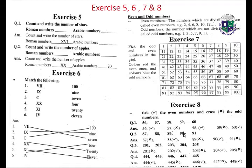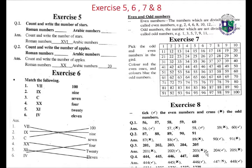56 tick, 57 cross, 58 tick, 59 cross, 60 tick. Question number two: 87 cross, 88 tick, 89 odd, 90 even, 91 odd, 201 odd, 202 even, 203 odd, 204 even.